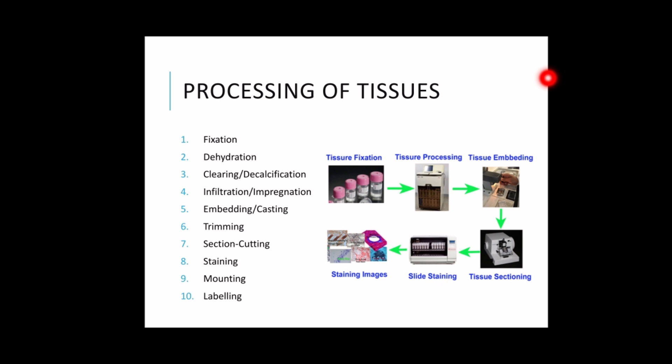Fifth is embedding, otherwise known as casting or blocking — the process by which the impregnated tissue is placed into a precisely arranged position or orientation in a mold containing a medium which is then allowed to solidify. Sixth is trimming — to remove the excess wax from the embedding step. Seventh is section cutting or microtomy — to cut the paraffin-embedded sections into thin slices of 4 to 6 microns. Eighth is staining — the application of different dyes to the slide containing the tissue specimen.